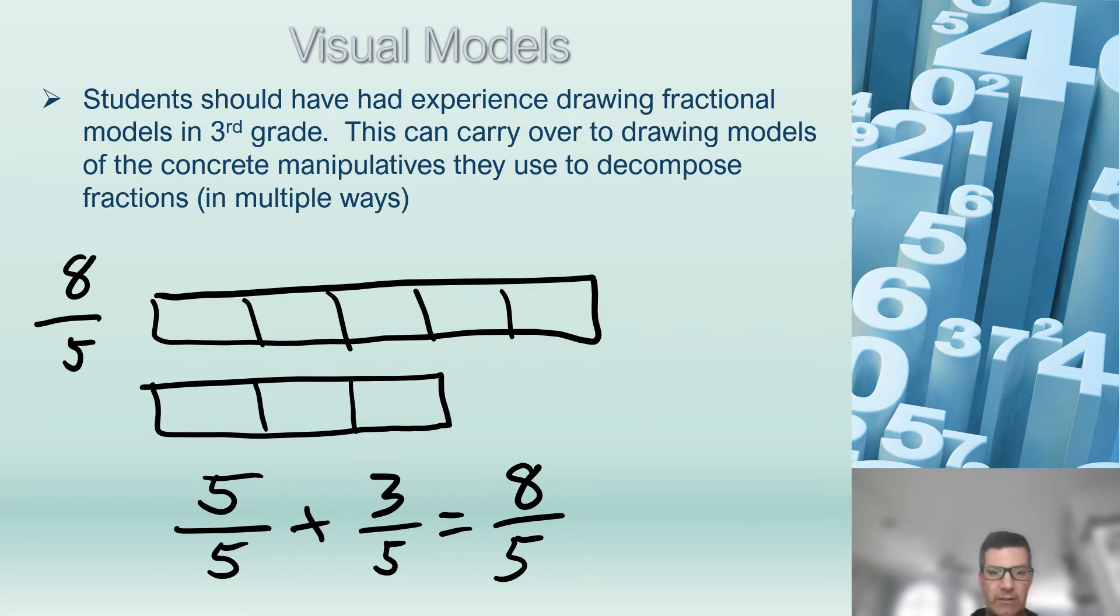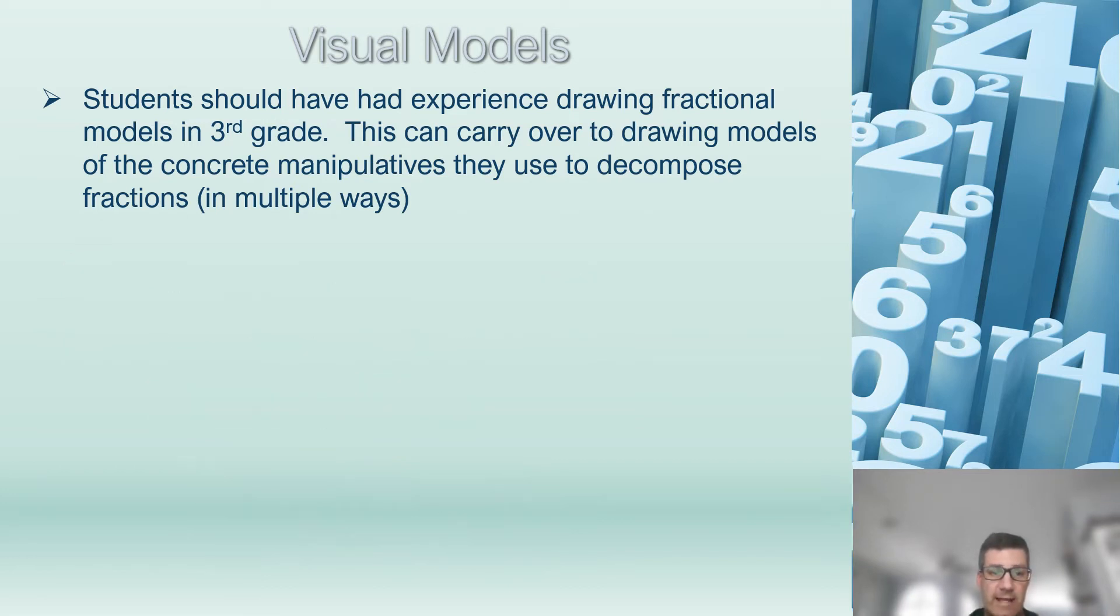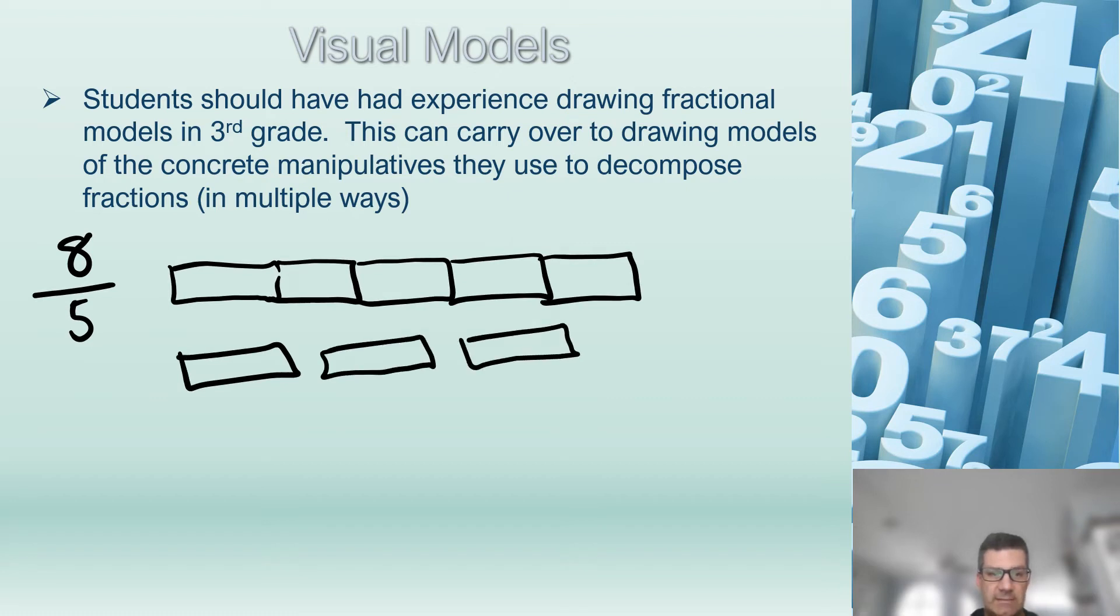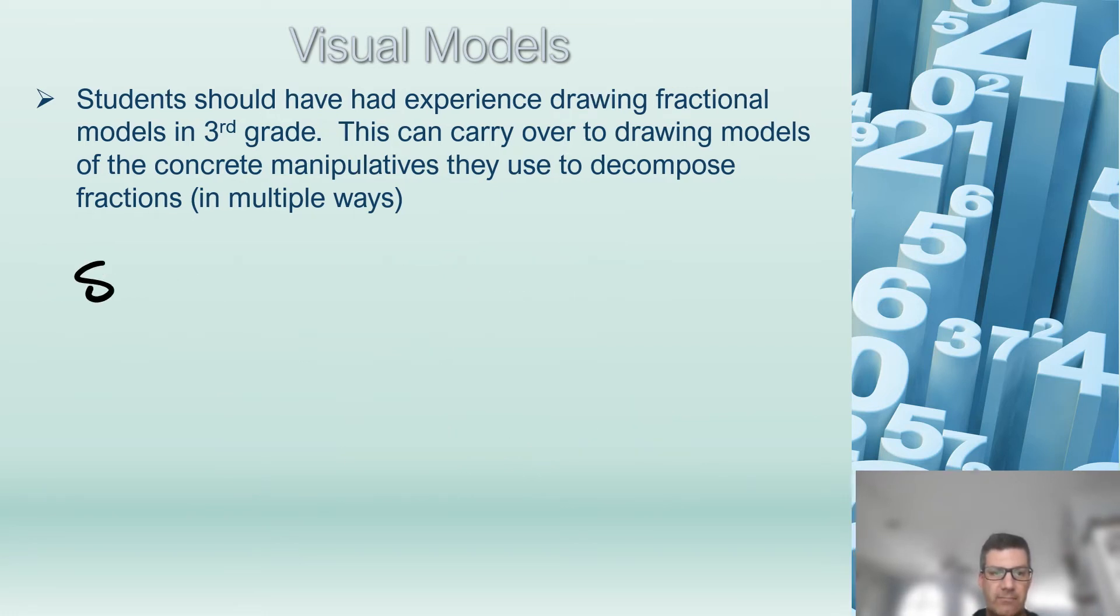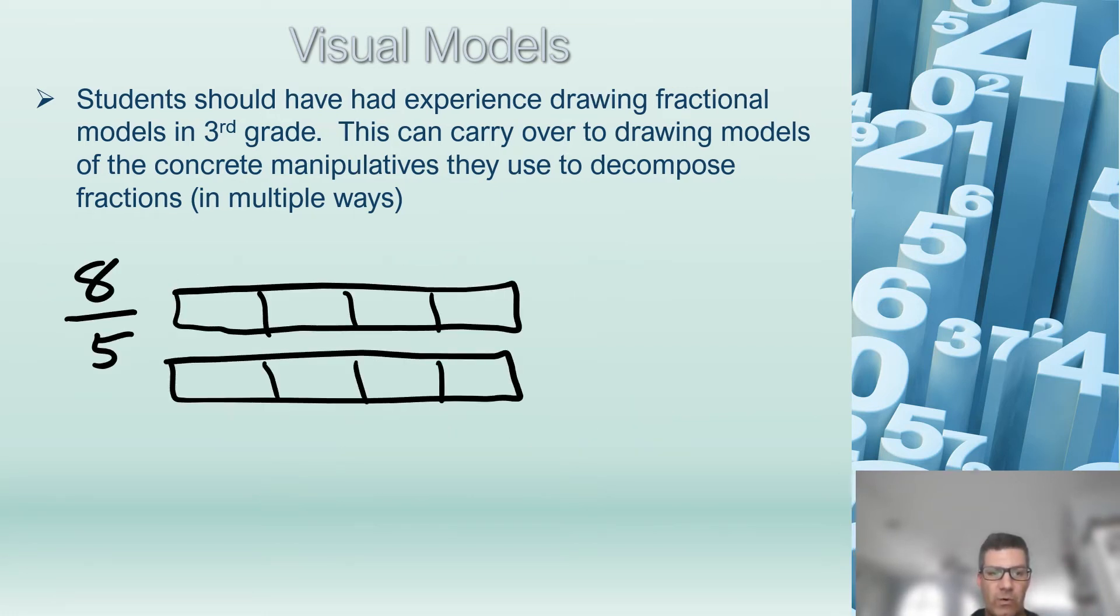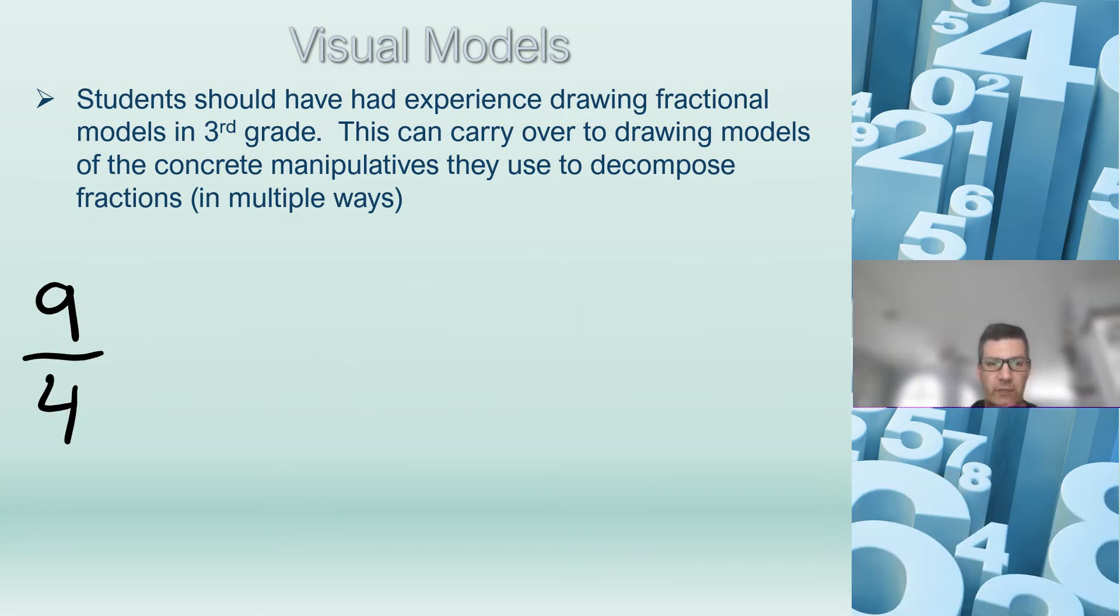Think about all the different ways they can do it. Challenge them. How many different ways can you decompose eight-fifths? Maybe they could think of it as five-fifths and three-fifths. Perhaps they could break up those three-fifths into unit fractions but still keep that whole five-fifths. Or maybe they're using their doubles fact of eight. I know eight can be thought of as four and four. Same thing. Eight-fifths can be thought of as four-fifths and four-fifths.